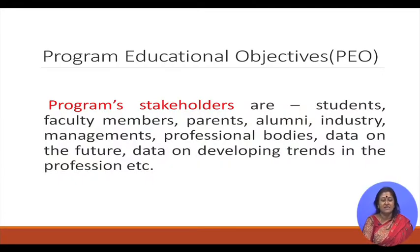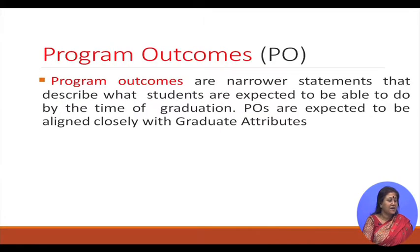Program Outcomes are narrower statements that describe what students are expected to be able to do by the time of their graduation. PEOs are expected to be closely aligned to the graduate attributes. Program outcomes should be very specific, measurable, and achievable.